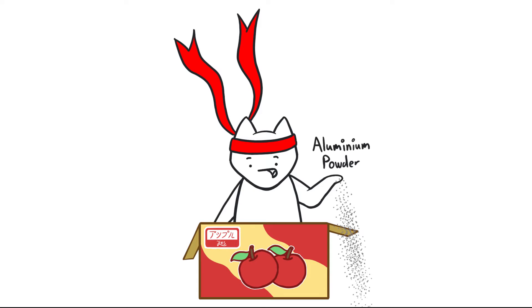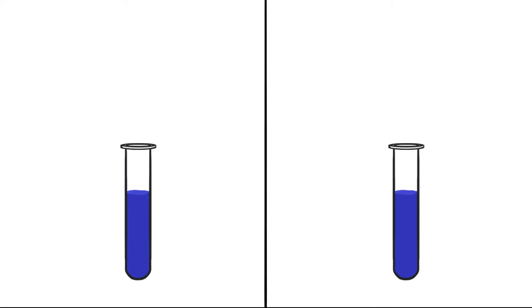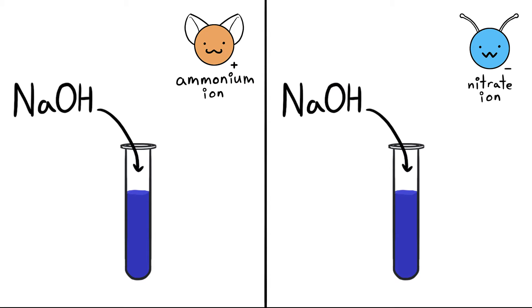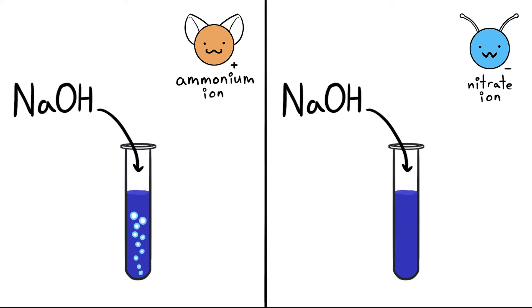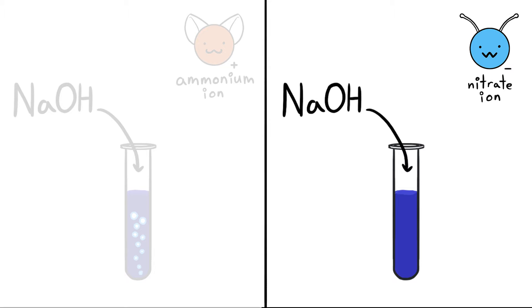The key here depends on whether aluminum powder is added. When testing for both ammonium and nitrate ions, sodium hydroxide is added. When testing for ammonium ions, the test is conducted without aluminum powder after sodium hydroxide is added. When testing for nitrate ions, the test is conducted with aluminum powder after sodium hydroxide is added.